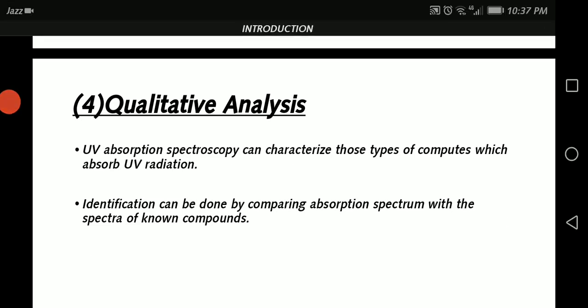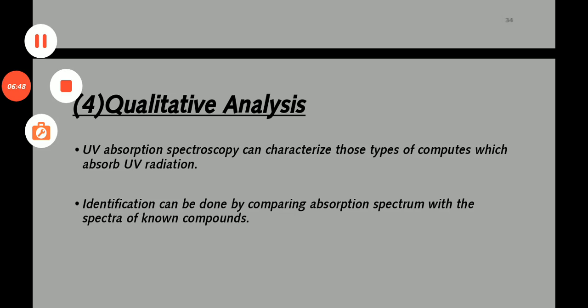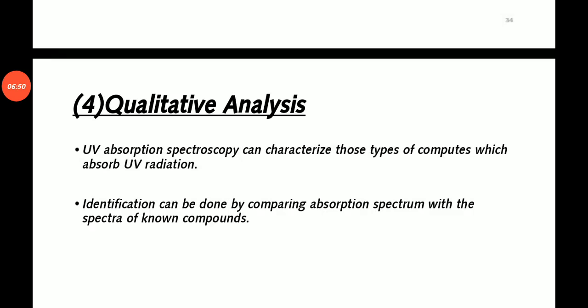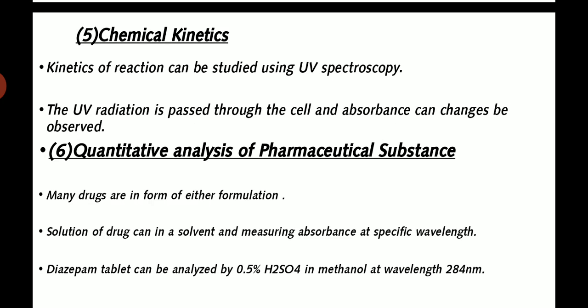Qualitative analysis. UV absorption spectroscopy can characterize those types of compounds which absorb UV radiation. Identification can be done by comparing absorption spectrum with the spectra of known compounds. Chemical kinetics of a reaction can be studied using UV spectroscopy. Radiation is passed through the cell and absorbance can be measured.